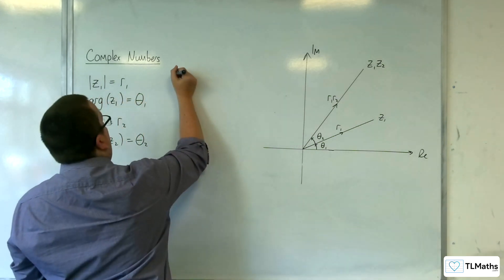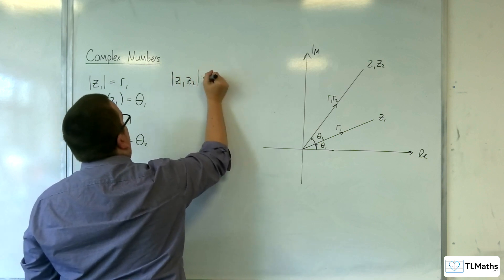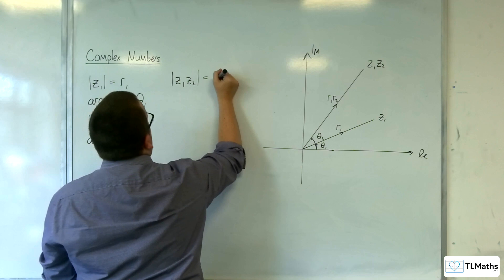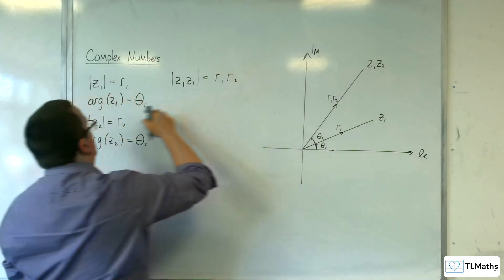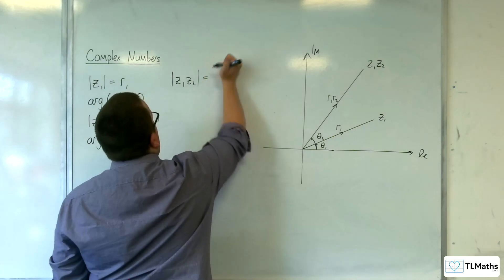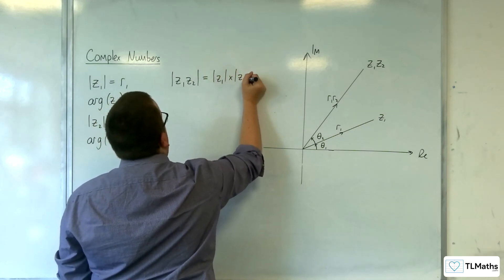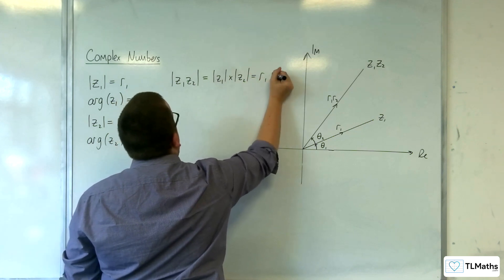So to be clear, the modulus of Z1 Z2 is the same as multiplying the two moduli together, R1 times R2. So let's write that as the modulus of Z1 times Z2 equals R1 R2.